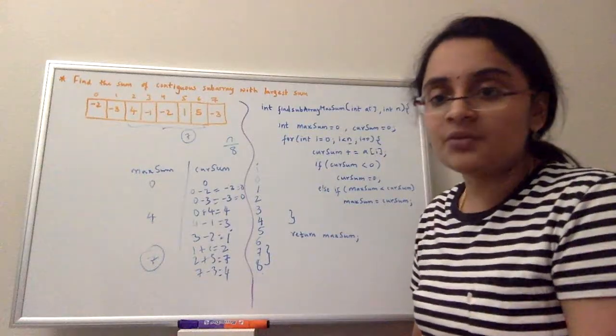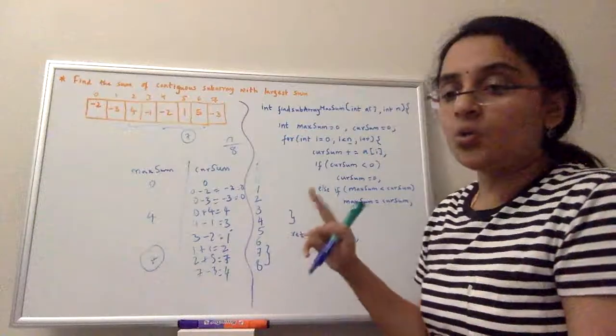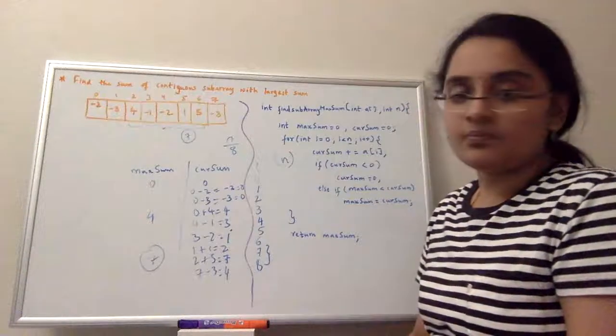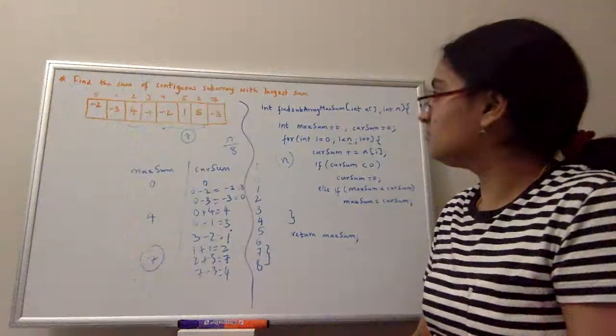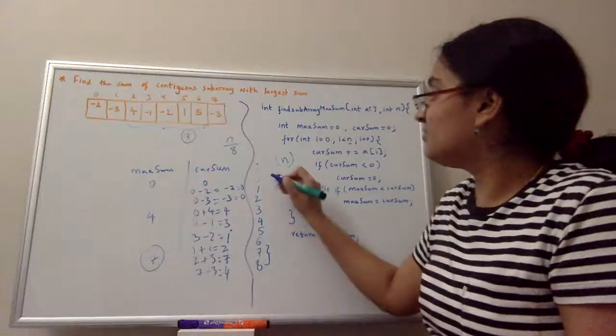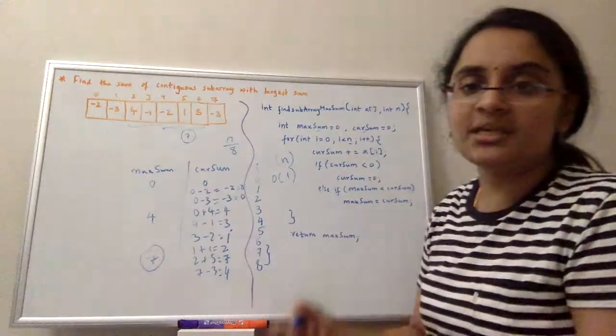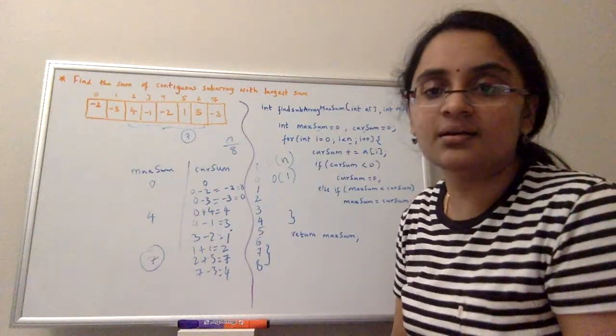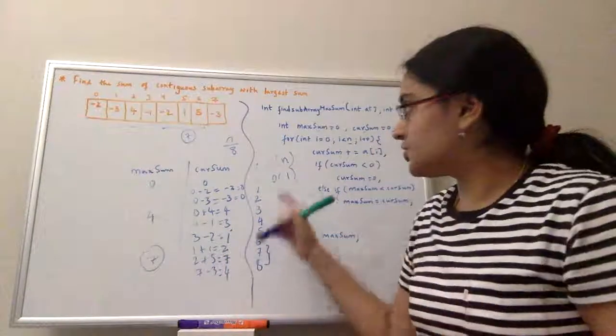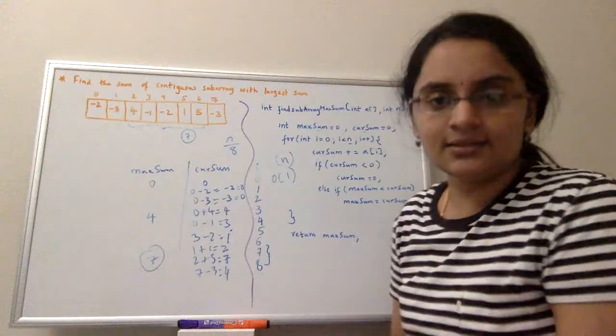When coming to the time complexity, because we are traversing the entire array only once, it is O of n, where n is the size of the array. And the space complexity is O of 1 because we are just using two variables which is equivalent to a constant. Yeah, this is how it's done. Thank you.